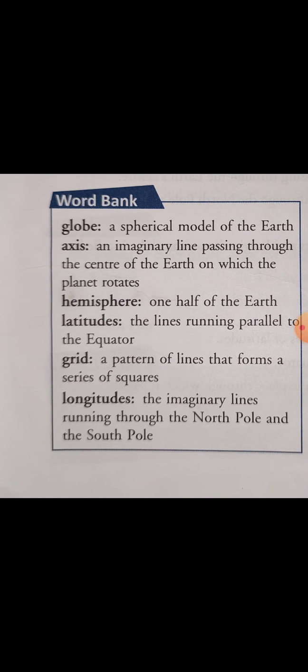Next we have the word bank. This can also come as word meanings or 'define the following.' First is globe — a spherical model of the earth is known as a globe. Then we have axis: an imaginary line passing through the center of the earth on which the planet rotates.